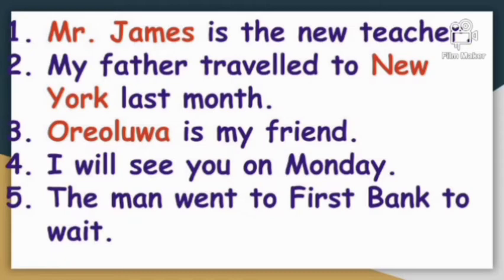Let's look at other examples. Number one: Mr. James is a new teacher — I've called the name of the teacher, Mr. James. Number two: My father traveled to New York last month. Look at the words in red — New York. I didn't just say my father traveled out; I mentioned the particular place he went to. Number three: Orelua is my friend — I've mentioned the name of my friend, which is Orelua.